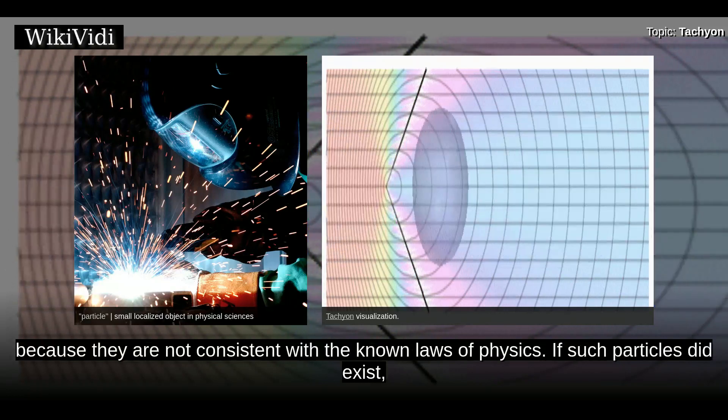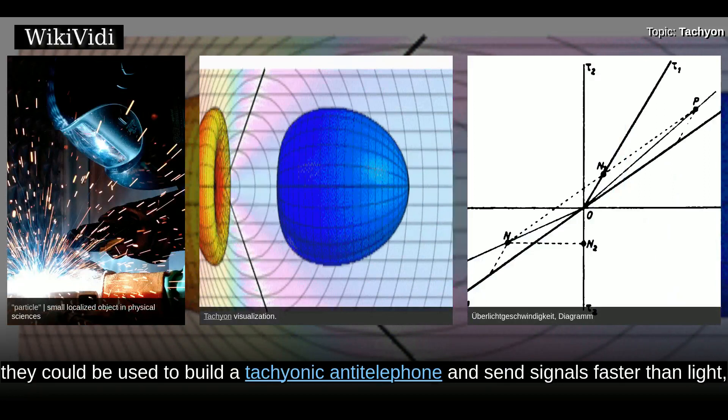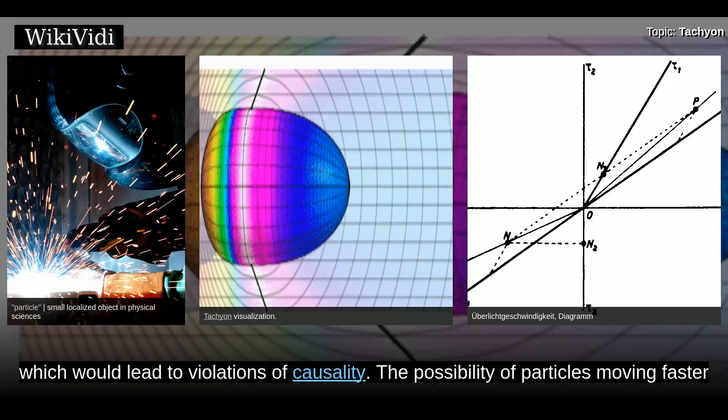If such particles did exist, they could be used to build a tachyonic anti-telephone and send signals faster than light, which would lead to violations of causality.